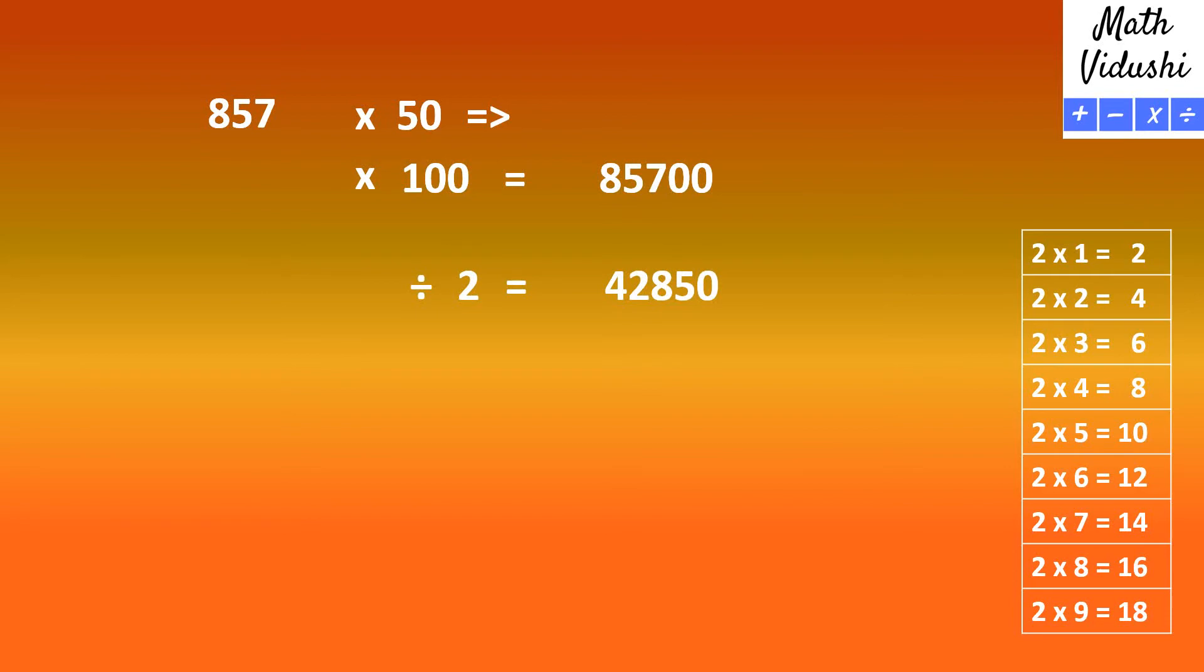So you get 85700. Divide that by 2 to get 42850. Therefore, 857 multiplied by 50 is 42850.